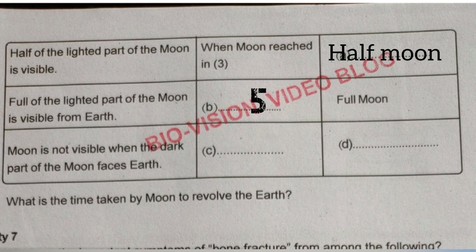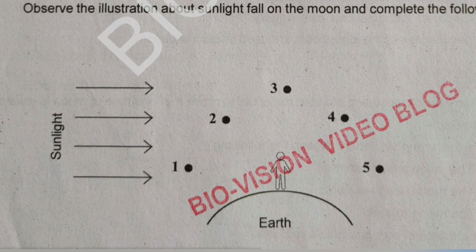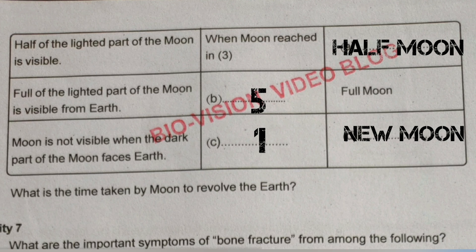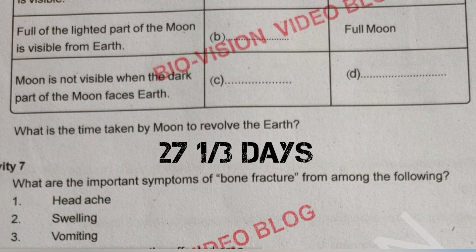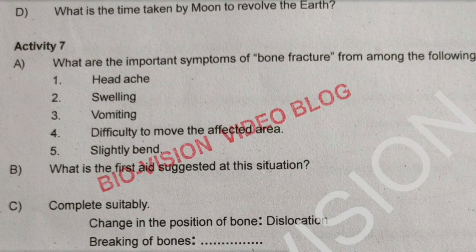Moon is not visible when the dark part of the moon faces Earth. This is fill in the blanks. The answer is D — new moon.